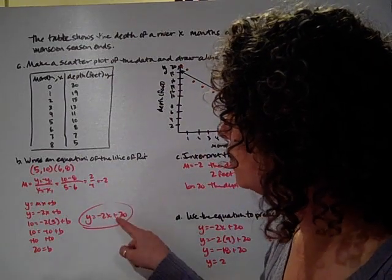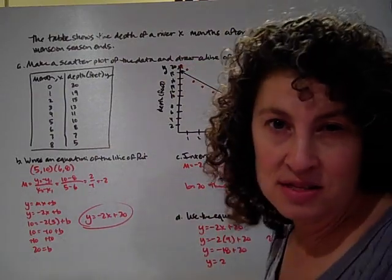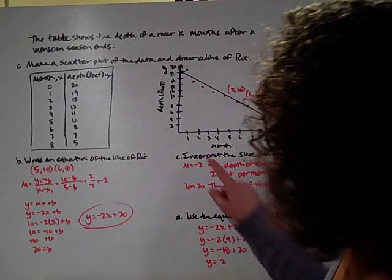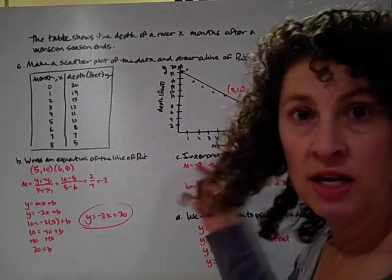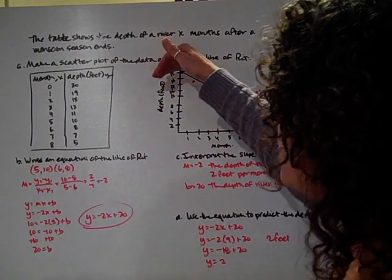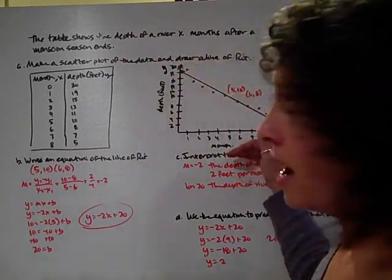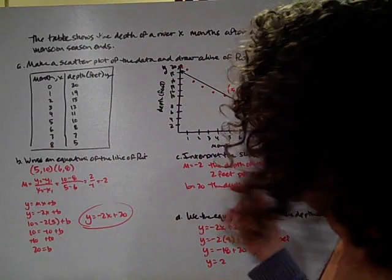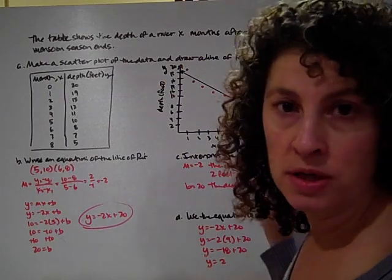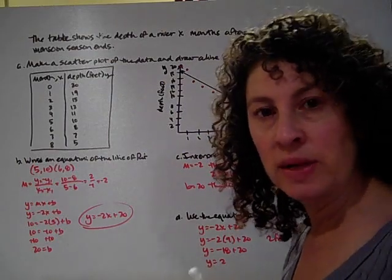So I've come back and write my equation. Y equals negative 2X, that was my slope, plus 20 which is my Y intercept. Now 20 makes sense as a Y intercept because it crosses here at 20 anyway. Next question. Interpret the slope and the Y intercept of the line. So my slope is negative 2. Remember slope is Y over X. Y is the depth in feet and X is the months. So since slope is Y over X, my slope is feet per month. So this is negative 2 feet per month. So that slope means the depth of the river decreases, 2 feet per month. Again, interpret, take it from the math and explain it in English.